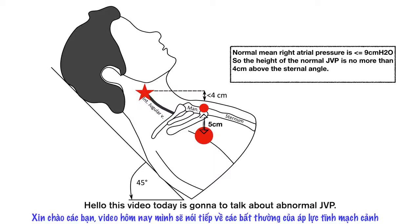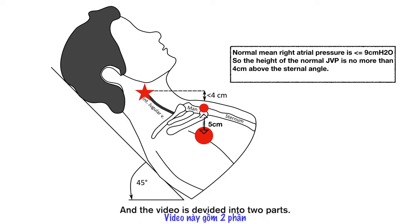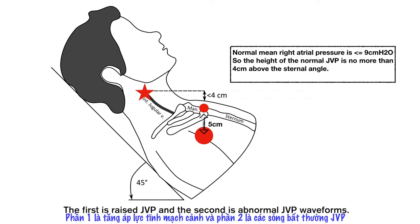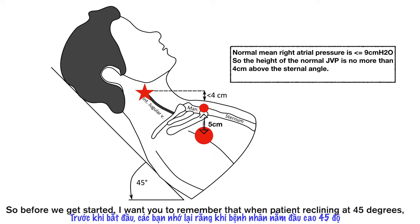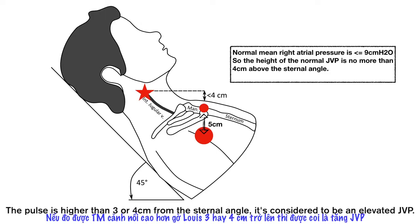Hello! This video today is going to talk about abnormal JVP. The video is divided into two parts. The first is raised JVP, and the second is abnormal JVP waveforms. Before we get started, remember that when a patient is reclining at 45 degrees, if the JVP is higher than 3 or 4 cm from the sternal angle, it is considered to be an elevated JVP.